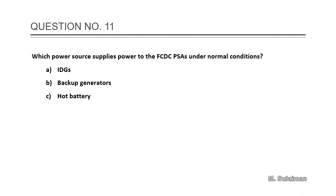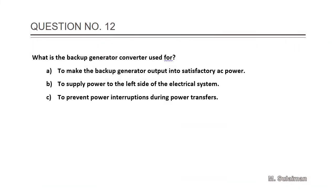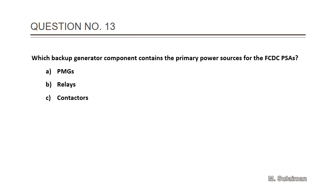The answer is B: It can supply all of the airplane power. Question 11: Which power source supplies power to the FCDC PSAs under normal conditions? Answer is A. Question number 12: What is the backup generator converter used for? Answer is A: make the backup generator output into satisfactory AC.